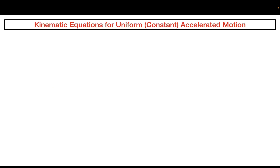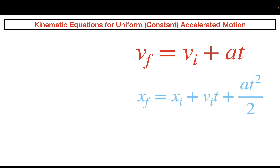I'd like to start by giving you the main three kinematic equations for uniform accelerated motion that you have to know for the MCAT. The first is VF equals VI plus AT, where VF is the final velocity, VI is the initial velocity, A is the acceleration, and T is the time. The second is XF equals XI plus VI times T plus AT squared over 2, where XF is the final position, XI is the initial position, VI is the initial velocity, T is time, and A is acceleration.